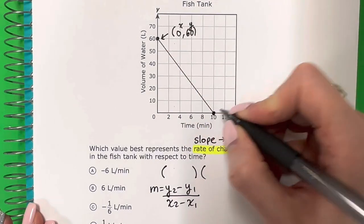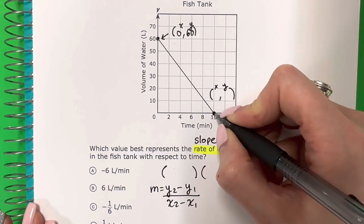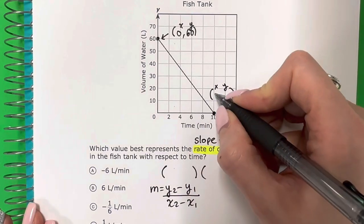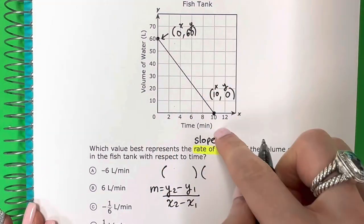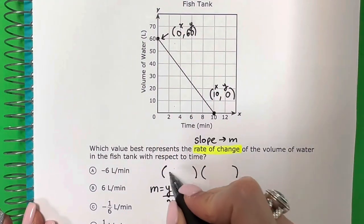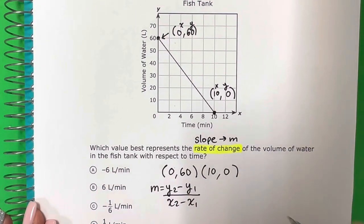And I'm going to pick the X intercept here which is 10. This 10 is on the X line so it's X and Y is 0. Okay, so I'm going to write those down right here. So here is 0, 60 and 10, 0.